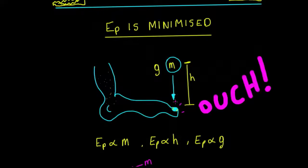If you drop a 1 kilogram mass on your toe it's going to hurt; a 10 kilogram mass will really hurt; a 100 kilogram mass will hurt bad. So we can say the potential energy is in some way related to the mass — directly proportional to the mass. As the mass goes up, the potential energy goes up. As the mass goes down, the potential energy goes down.